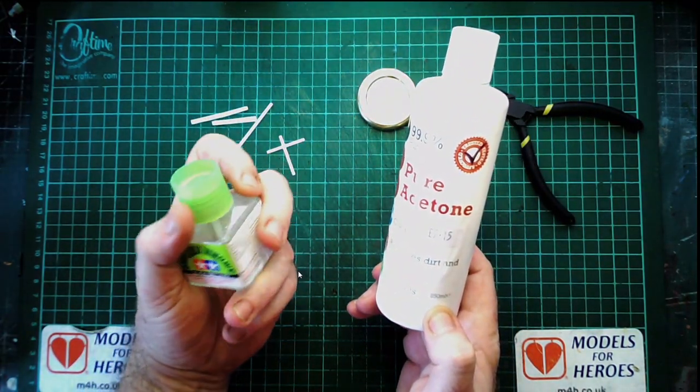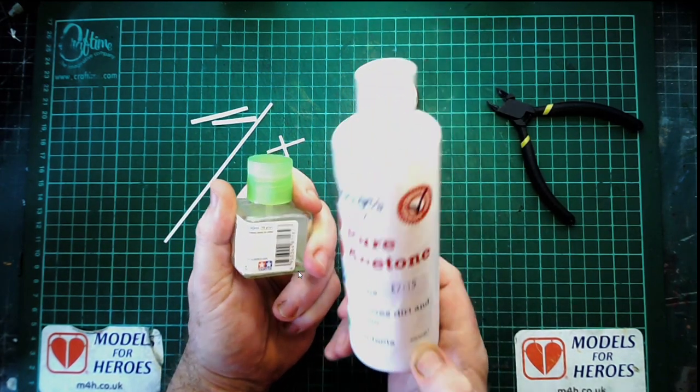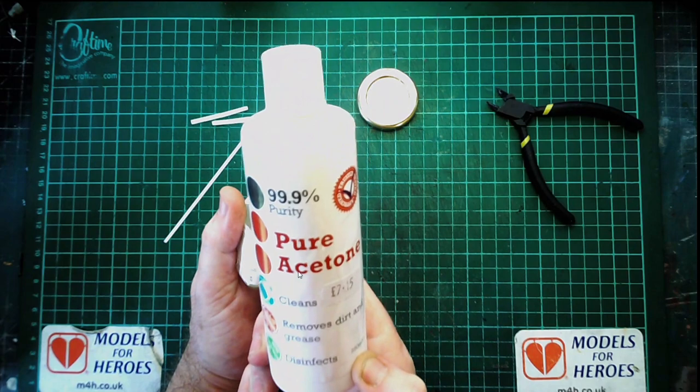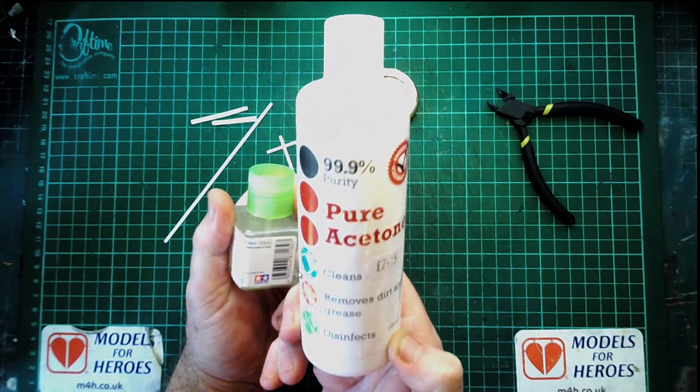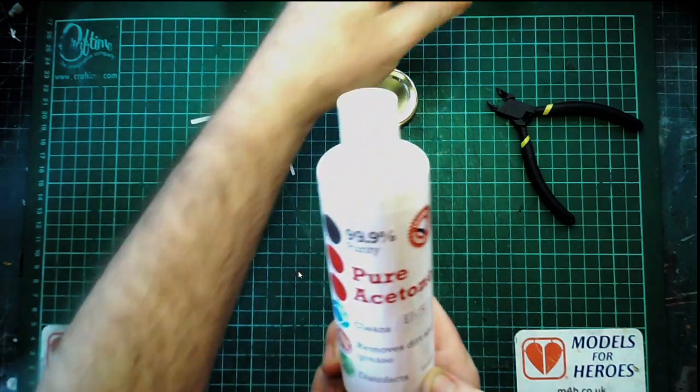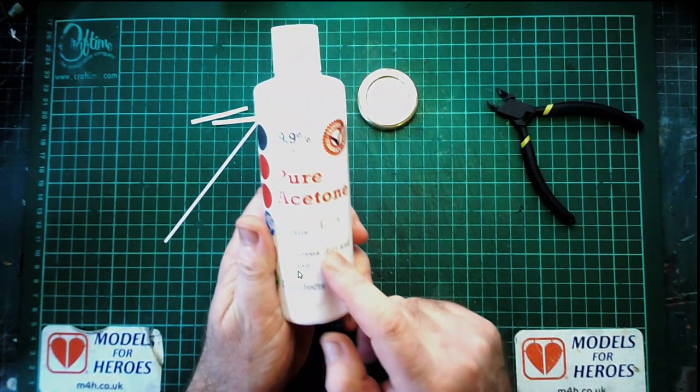This bottle of acetone cost me £7.15 for 250ml. And after looking around I found that I can get a litre for £9.49 or 5 litres for £23.50. Both including postage and packaging from eBay. I'm sure someone could find another one cheaper.